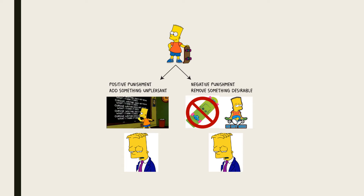Let's look at another example of each type of punishment. Bart is disruptive in class, which is a behaviour his teacher wants to weaken. Using positive punishment, she could add an aversive stimulus such as after-school detention. Using negative punishment, his teacher could remove a desirable stimulus such as his skateboard. Either way, Bart's disruptive behaviour should be weakened — he is less likely to act disruptively in class in future.